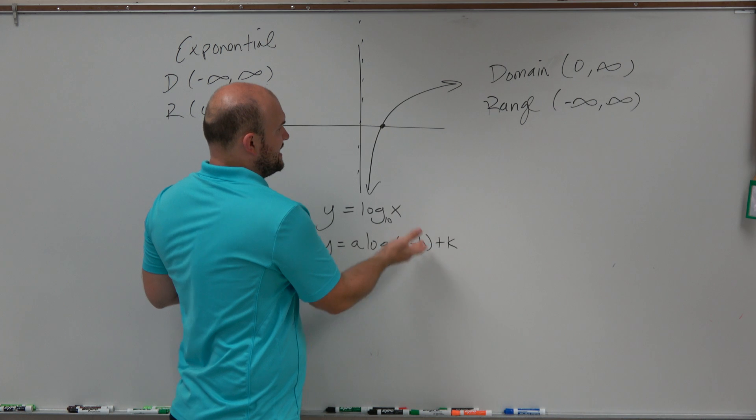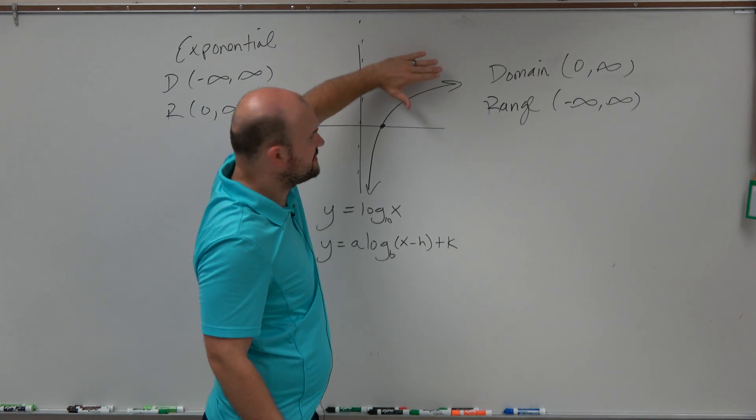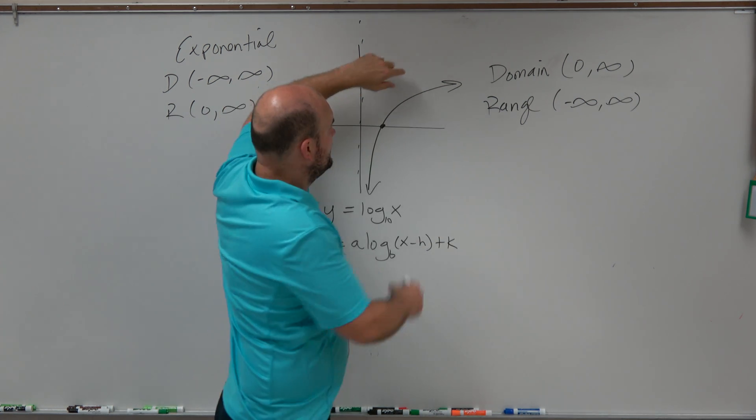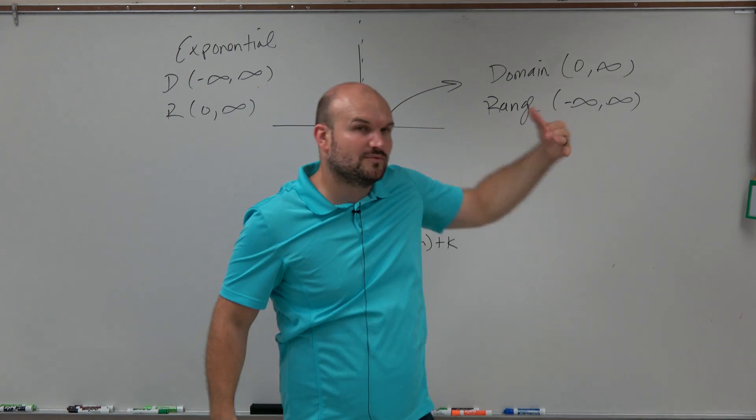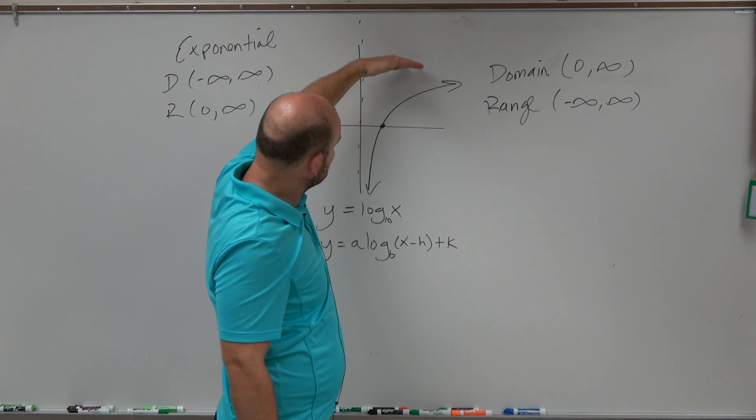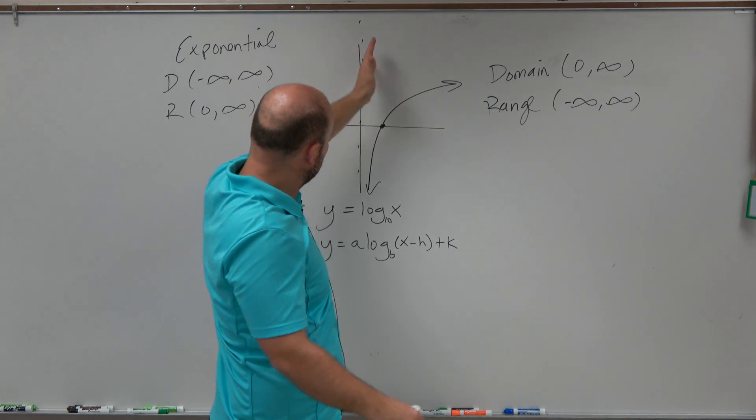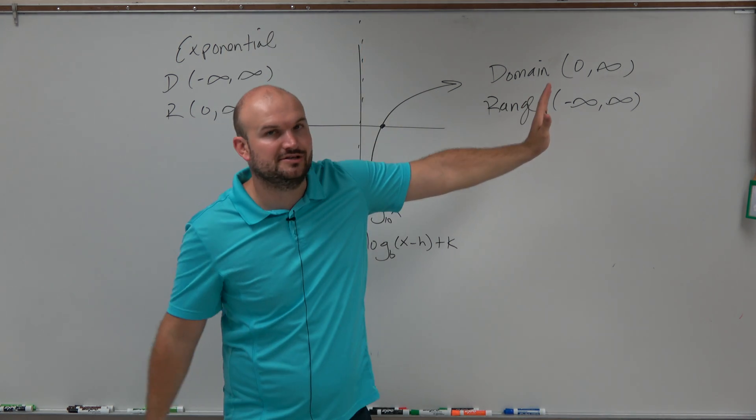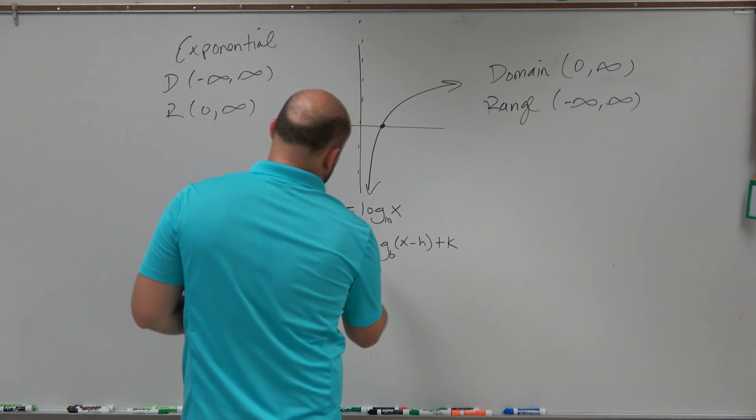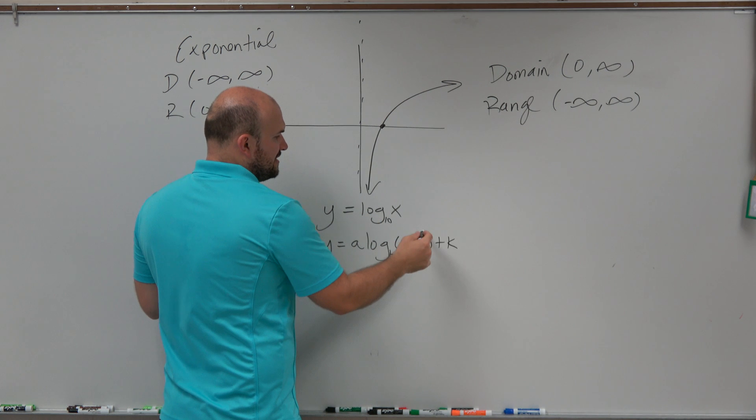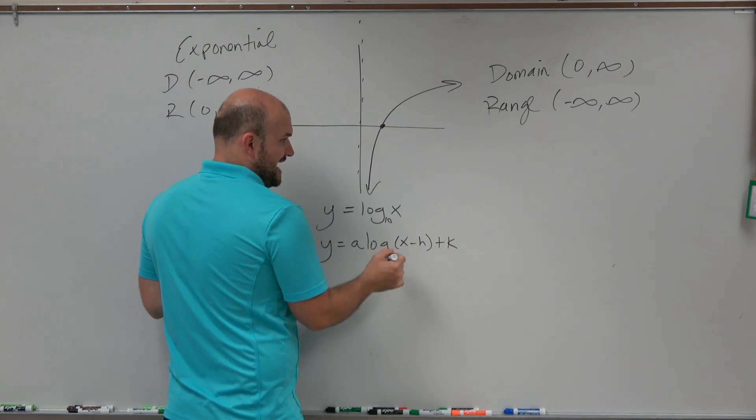k is the same thing. k is shifting this graph up or down. Well, even if I shift this graph up, let's say two units, the graph is still going to continue going up and it's going to still continue going down. So the range is not be affected. If I shift this graph two units up, it's still not going past 0 and it's still going to continue to the right. So the domain and range of a logarithmic graph are not affected by your a and your k. The only thing it's going to be affected by in this example is going to be your h.